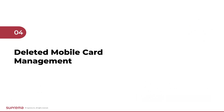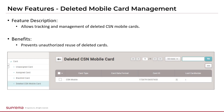Next is the deleted mobile card management menu. When the mobile card, which is one of the credential information in the User menu, is deleted, the deleted CSN mobile card menu has been added to manage these records. Through this, you can check and manage the deleted mobile card information.